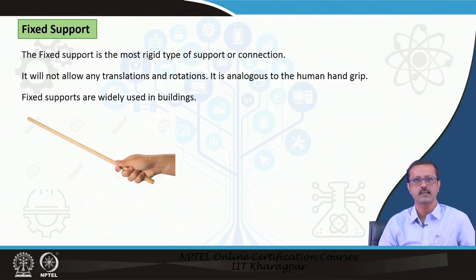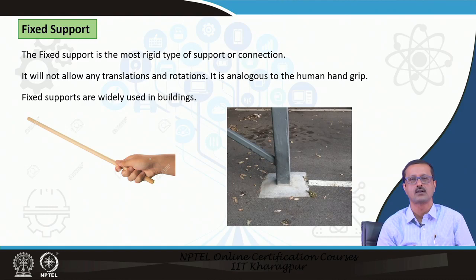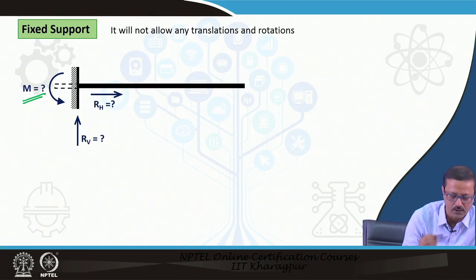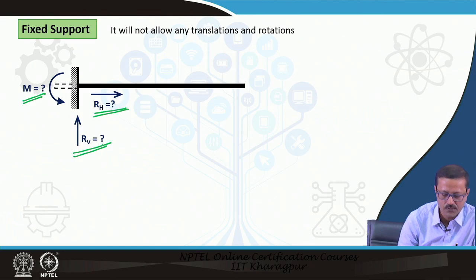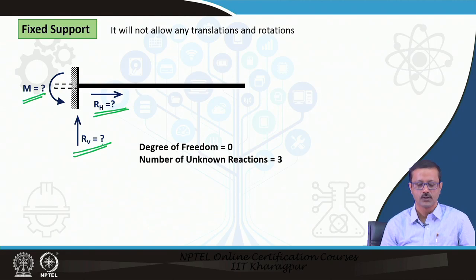In a fixed support, everything is arrested. Like someone holding a stick firmly in hand, or something well-grouted in a vertical or horizontal plane. Since it is not a hinge it cannot move, so there will be an unknown moment. It cannot allow any vertical or horizontal movement, imparting vertical, horizontal, and moment reactions. It has no degree of freedom, so the number of unknowns is 3.